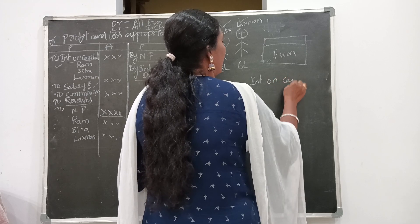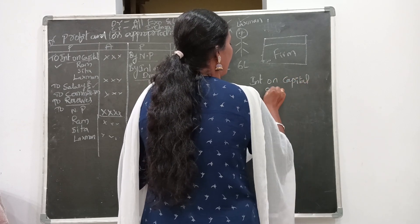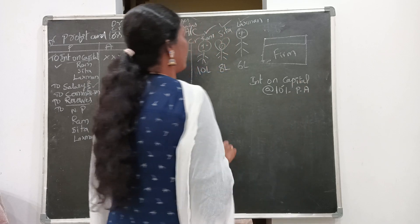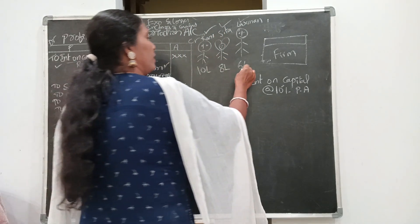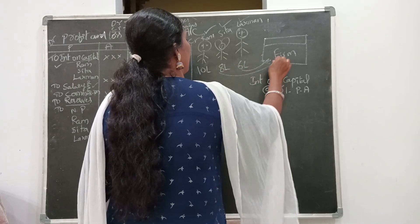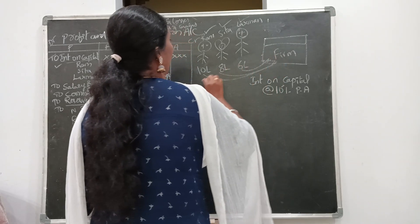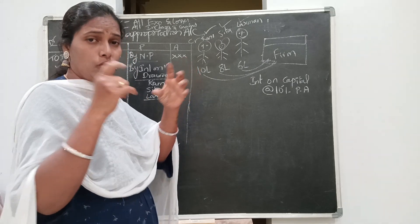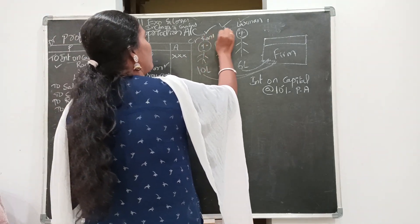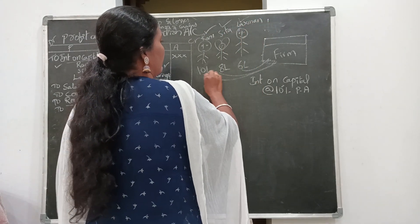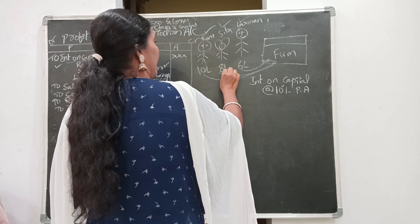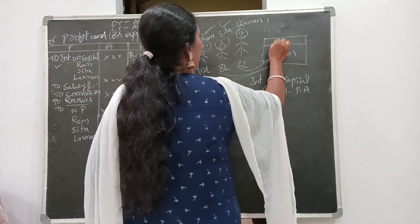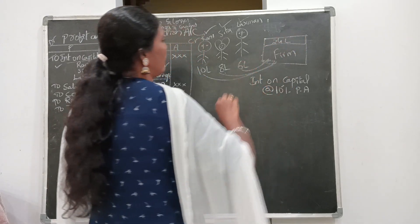Interest on capital at the rate of 10% per annum is mentioned in the deed. The capital amounts are already known: Ram invested 10 lakhs, Sita 8 lakhs, and Lakshman 6 lakhs. Together they invested a total of 24 lakhs capital into the business.